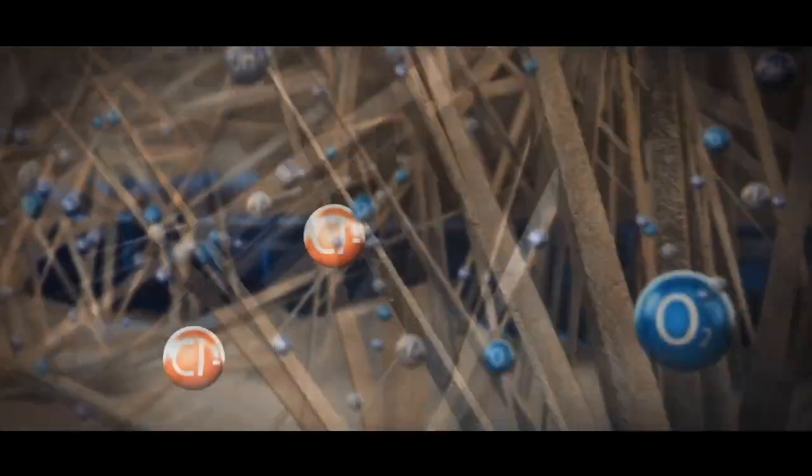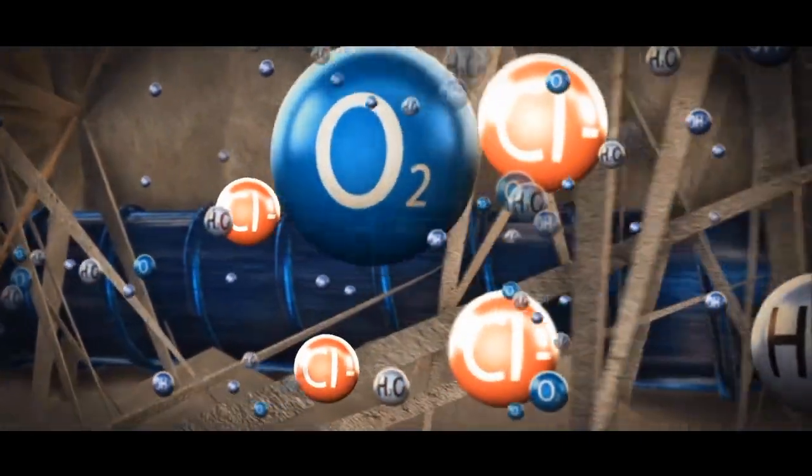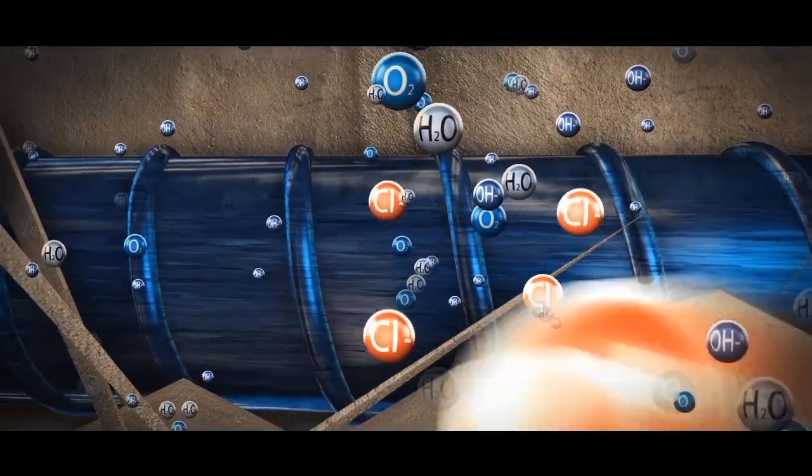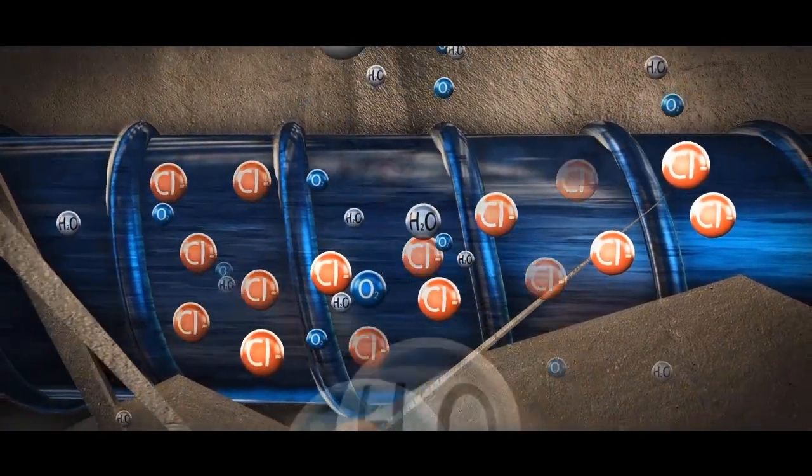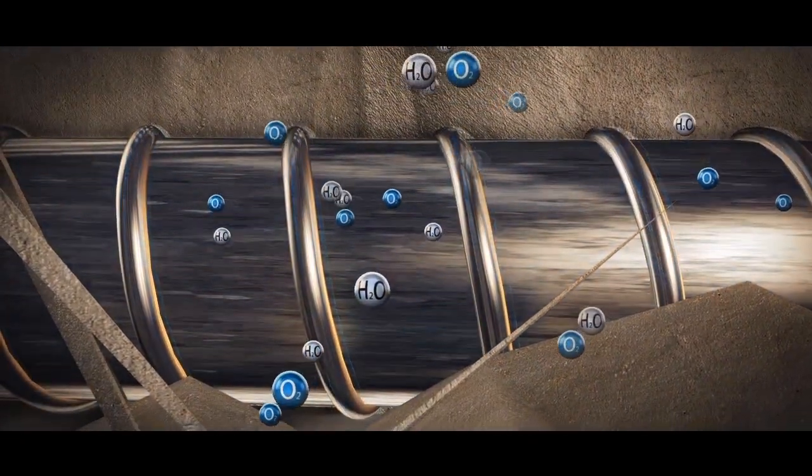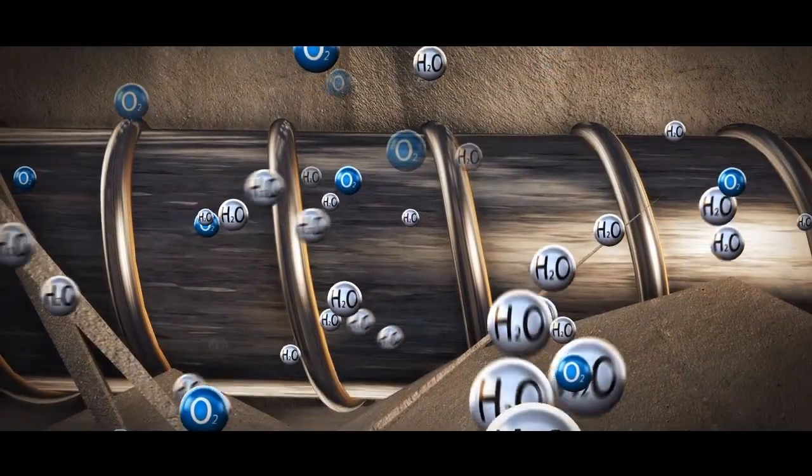In marine and aggressive high chloride soil conditions, chlorides migrate over time through concrete pores, building up at the surface of the steel to reach what is known as the critical chloride threshold, at which the passive layer breaks down.